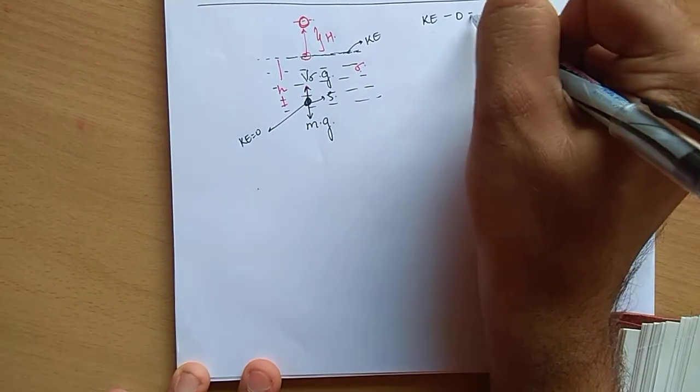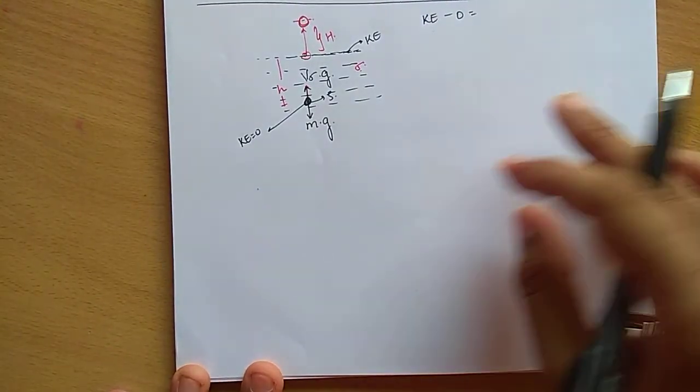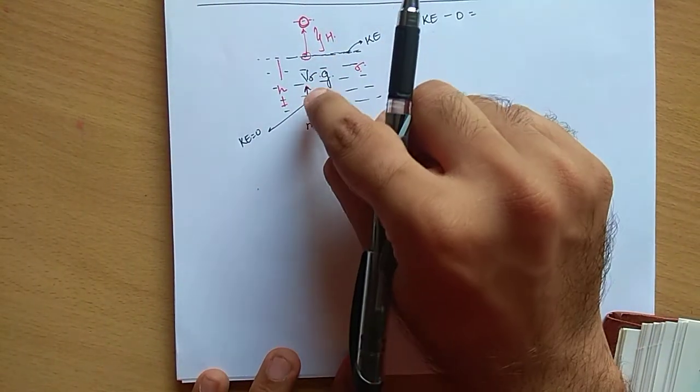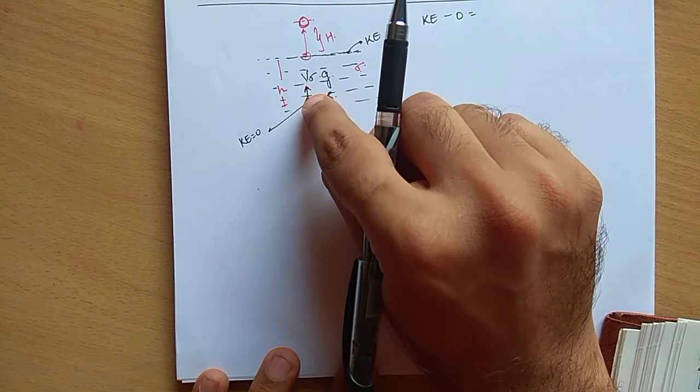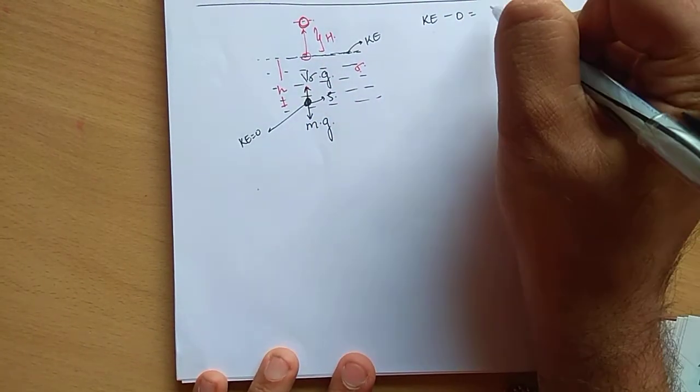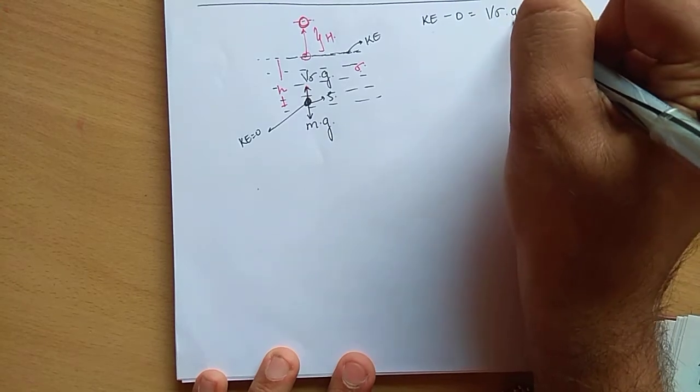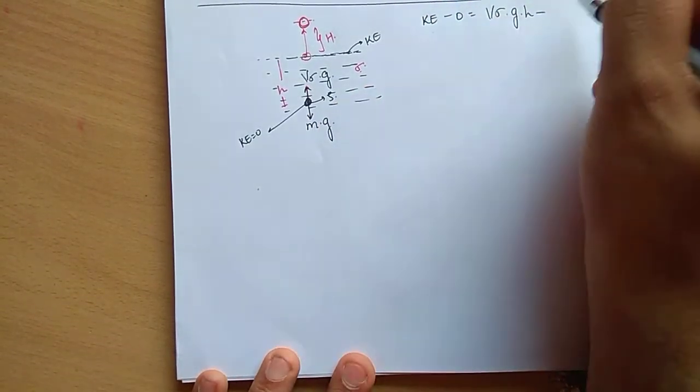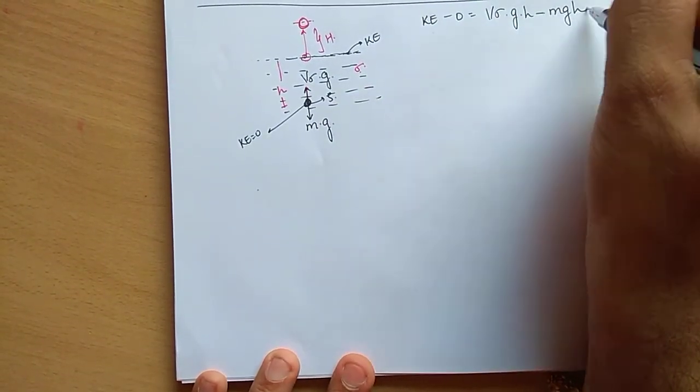Initial kinetic energy is zero. This is equal to work done. Yeh buoyancy force positive work karega, gravitational force negative work karega. So it is V sigma g into h minus mgh.